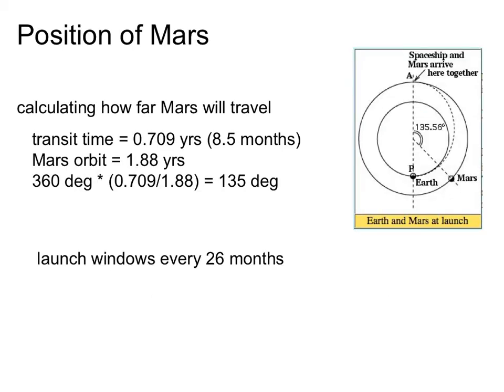The reason why we have launch windows, though, is we don't want the probe just to get to the orbit of Mars. We want the probe to get to the orbit of Mars when Mars is there. It doesn't do our probe any good to arrive here at the orbit of Mars if Mars is over here. So we want the probe and Mars to both show up here at this point at the same time. Which means we have to figure out where is Mars going to have to be in its orbit when we're launching for us to both end up at the same place?